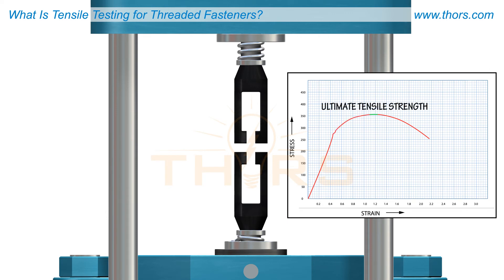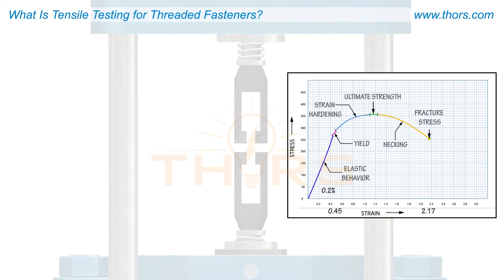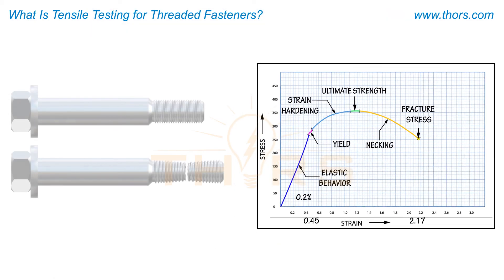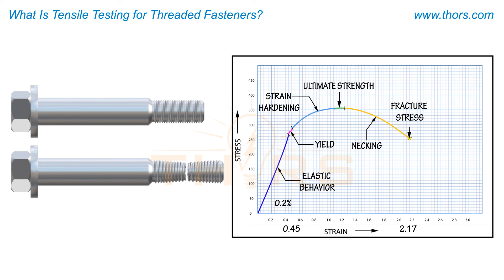The ultimate tensile strength, the reduction of area or range of necking, and the fracture stress point can all be determined. This concludes the tensile testing for threaded fasteners.